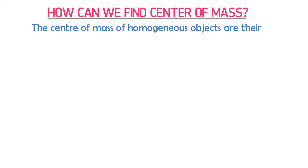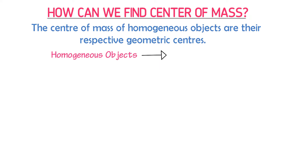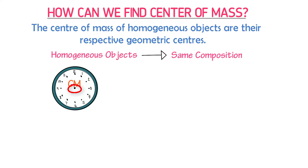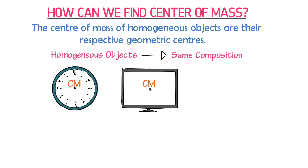The center of mass of homogeneous objects lies at their respective geometric centers. By homogeneous objects, I mean objects that have the same composition throughout. For example, consider a clock — it is made of plastic, so it is a homogeneous object. Its geometric shape is circular, and the geometric center of a circle lies at this point. Thus, the center of mass of this clock is at this point. Consider a TV — its geometric shape is square, and its geometric center is at this point. Hence, the center of mass of this TV is at this point.